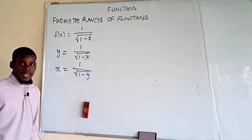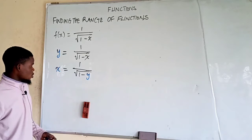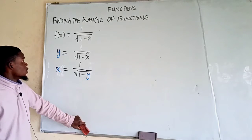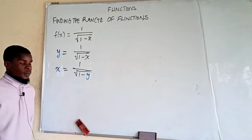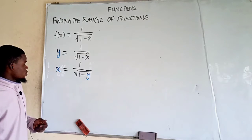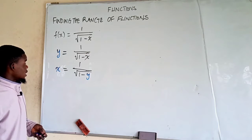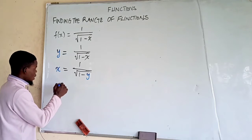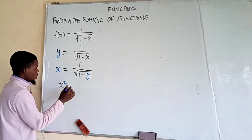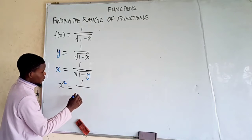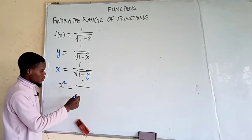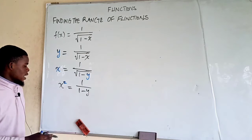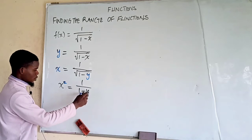Our work now is to make y the subject of the formula, and this new y will be called the inverse of the function. To do that, let's square both sides. That gives us x squared equals 1 over (1 minus y), since squaring the square root removes it, leaving just 1 minus y in the denominator.